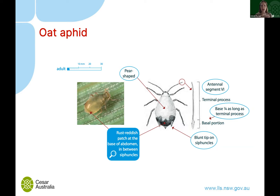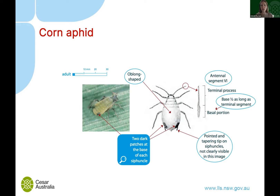Focusing on the oat aphid: they have a reddish patch at the base of the abdomen, quite blunt siphuncles, and medium-length antennae. The corn aphid has a slightly different pattern — dark patches at the base of the exhaust pipes, which are a little bit longer and have a tapering tip, plus a very oblong-shaped body.